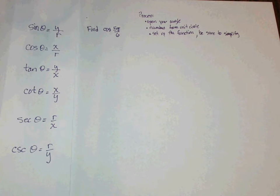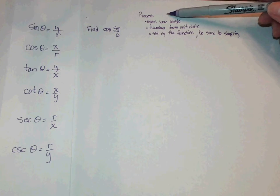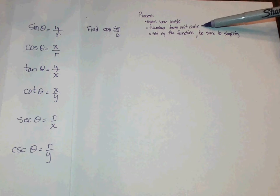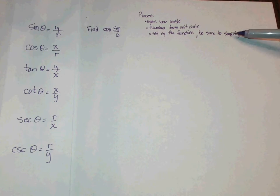In this example, I'm going to show you how to find the cosine of 5 pi over 6. Here's the process: open your angle, get your numbers from the unit circle, set up the function, and be sure to simplify.